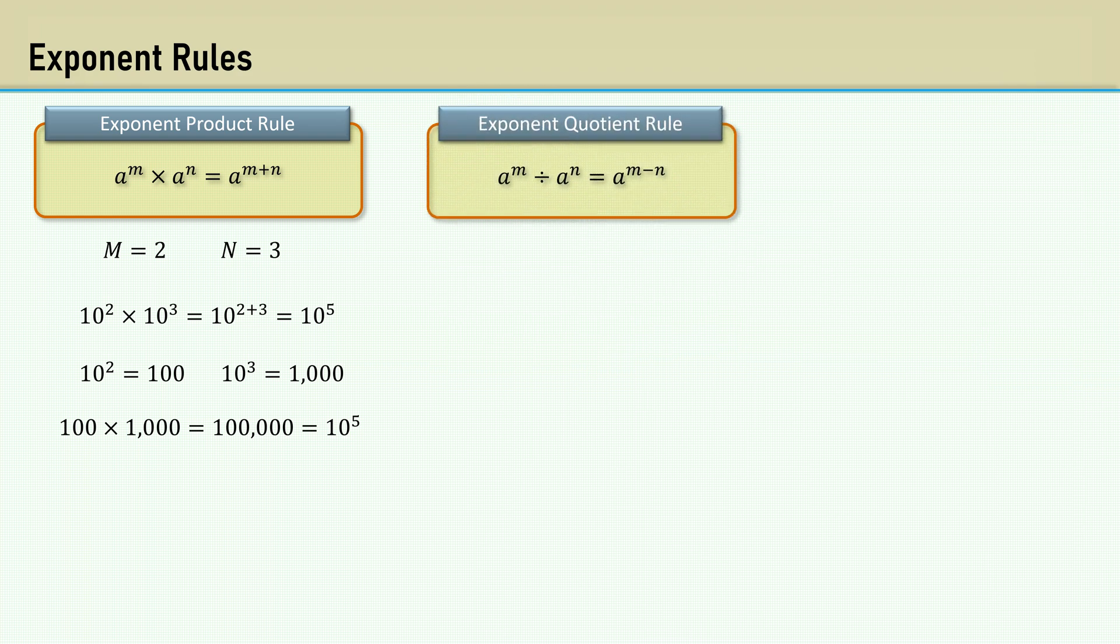Next is the exponent quotient rule. It states that a raised to the power of m divided by a raised to the power of n is equal to a raised to the power of m minus n. Let's say m is 5 and n is 2. That equals 10 to the 3rd. 10 to the 5th is 100,000 and 10 squared is 100. 100,000 divided by 100 is 1,000 or 10 to the 3rd.